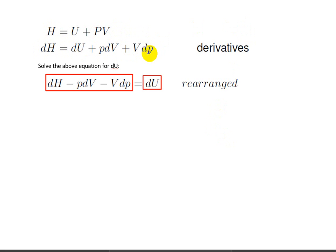So that's pdV plus Vdp, and then the only thing I'm going to do is I'm going to take the pdV and the Vdp and move them to the other side over here with the dH. So I have dH minus pdV minus Vdp, and that's equal to the change in internal energy.